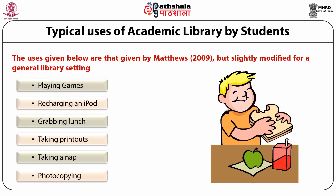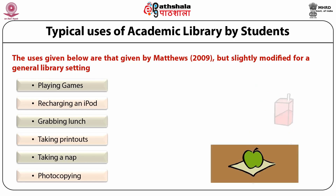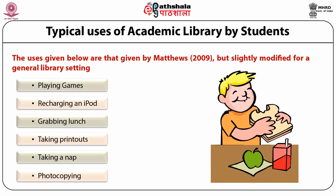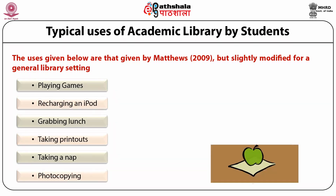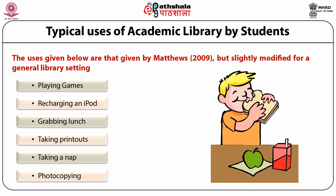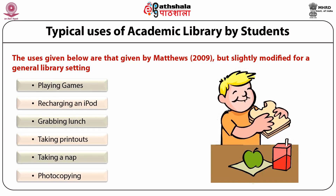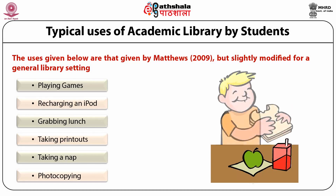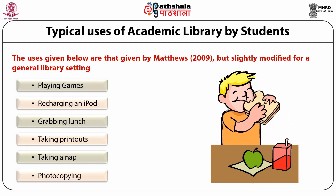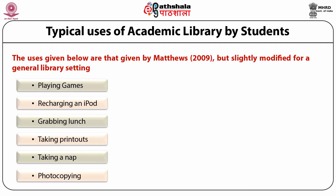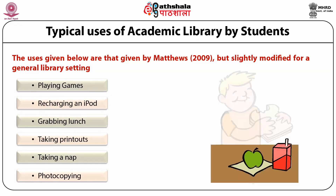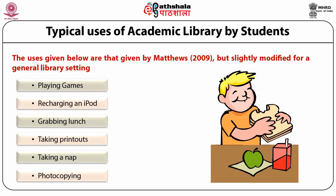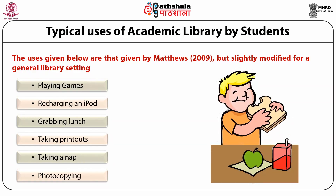While the library and the librarians strive for nobler pursuits, such as building collections or providing information literacy programs, library users live in a different world. For them, the library is merely one of the stops along the way of a very busy day in which they constantly juggle complex social, personal, professional and academic responsibilities. If the academic library has to play a meaningful role in their lives, the library and librarians have to communicate with them and find out how the library can fit within their lifestyle. It is for this purpose that the library needs to market its resources and services to their users.